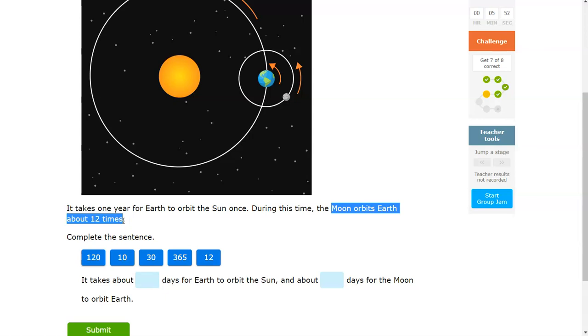So in a year, the Moon orbits the Earth 12 times. So you have to figure out how many days does it take for Earth to orbit the Sun.